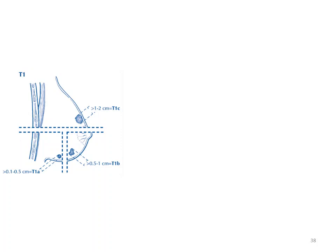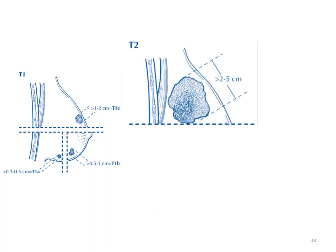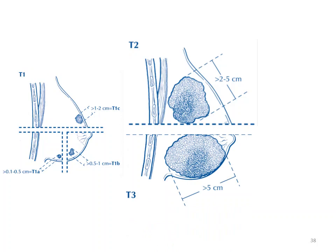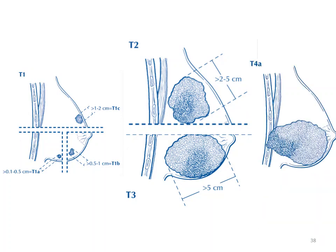T1 can be further divided: T1a is less than 0.5 cm, T1b is between 0.5 and 1 cm, and T1c is greater than 1 cm but less than 2 cm. T2 is between 2 and 5 centimeters. T3 is more than 5 centimeters in greatest diameter. T4 involves deep fixation to the chest wall or superficial fixation to the skin — as seen in the previous photo where skin was involved, making it T4.